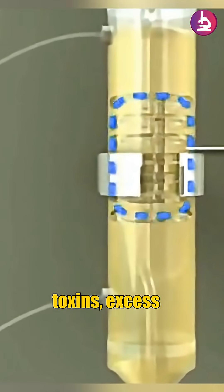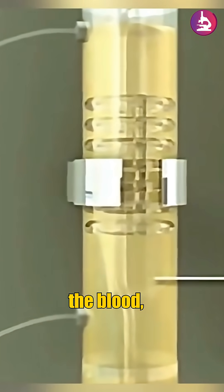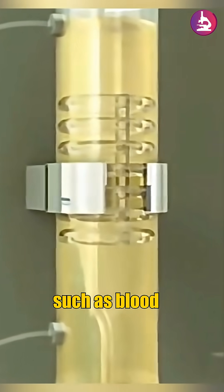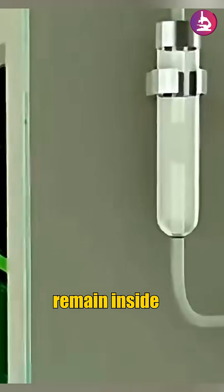This membrane enables toxins, excess salts, and surplus fluids to move out of the blood, while vital components such as blood cells and proteins remain inside the circulation.